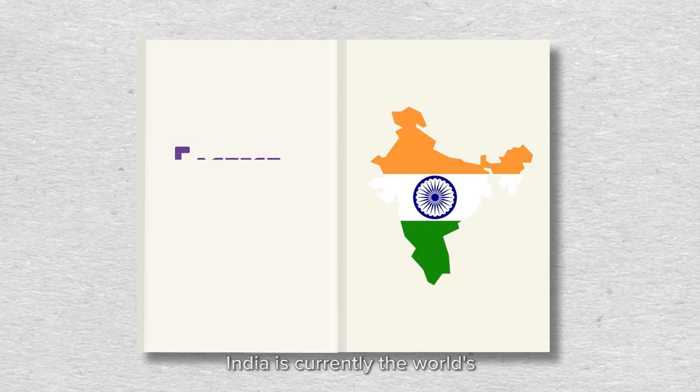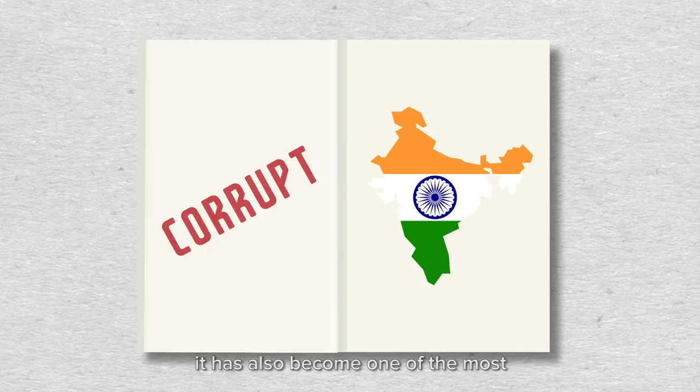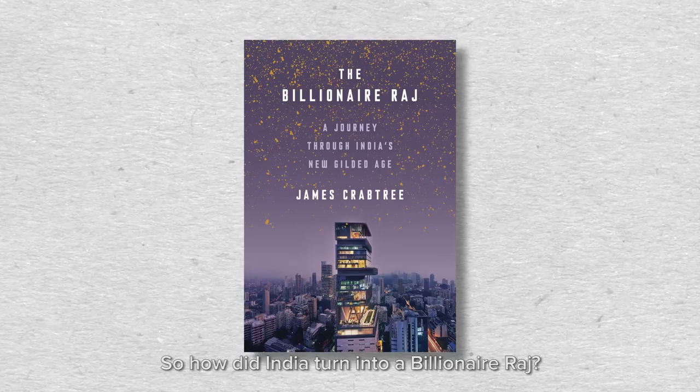India is currently the world's fastest growing major economy, but over the last 20 years it has also become one of the most corrupt and unequal. So how did India turn into a billionaire Raj?